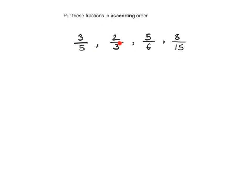The denominators of these fractions — the bases — are not the same. We cannot compare and order fractions unless the bases are the same. So how do I make the denominators the same? Look at the numbers here: 5, 3, 6, and 15. What is the lowest common multiple of these numbers?